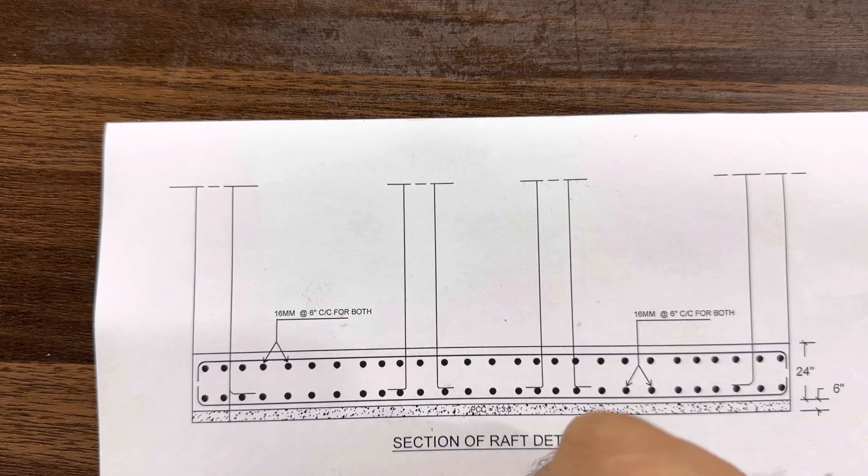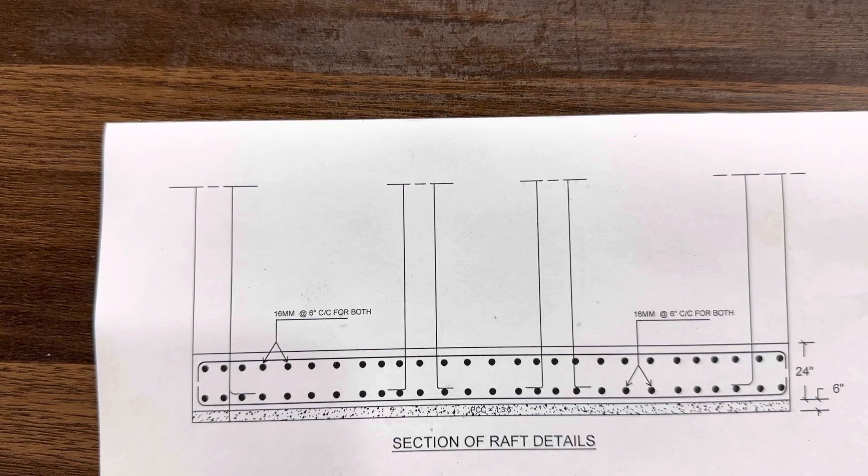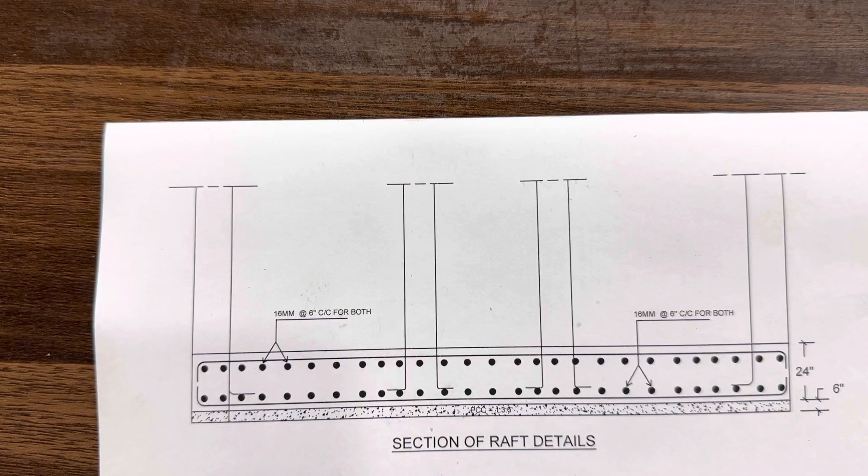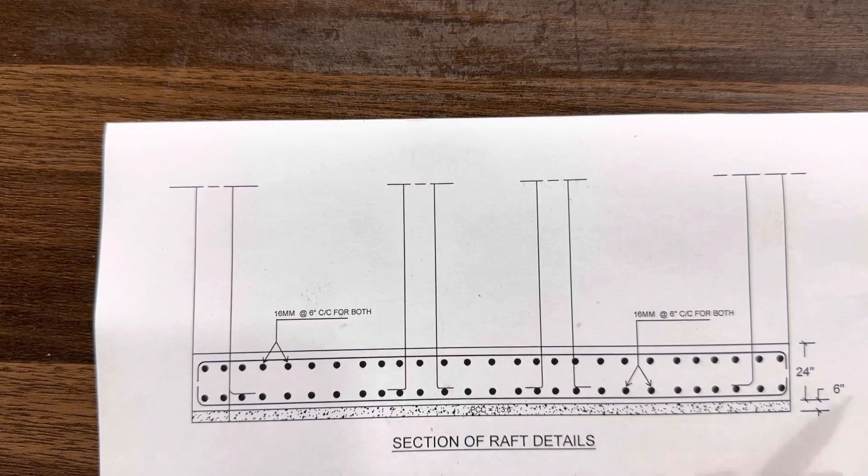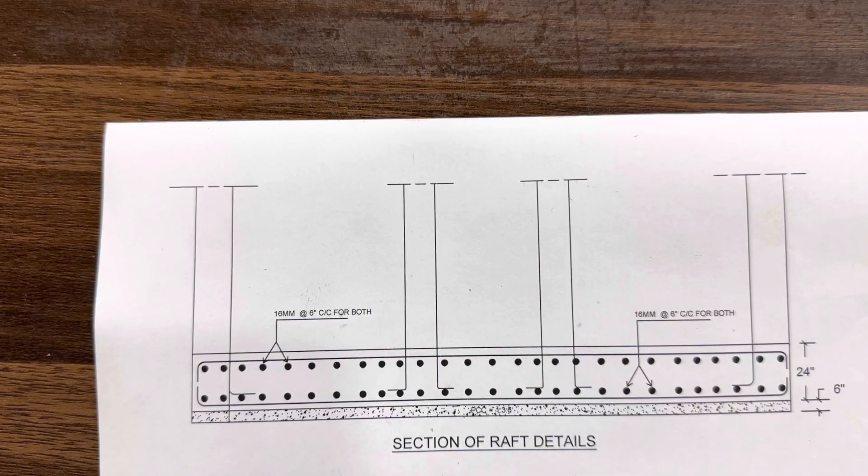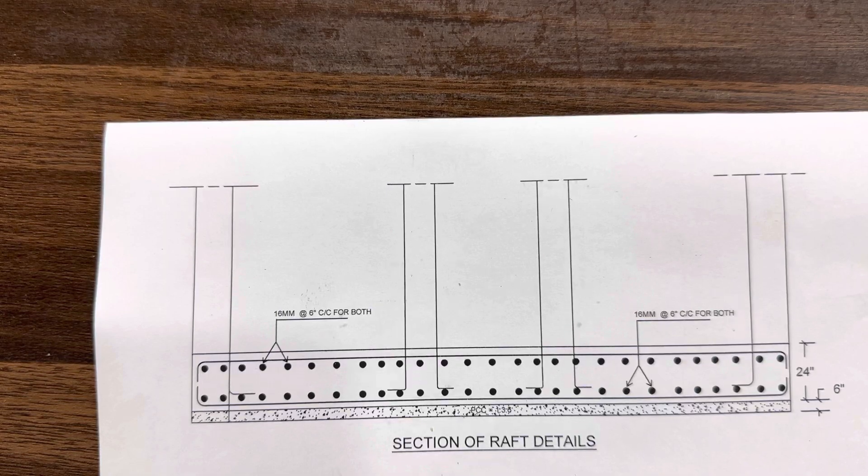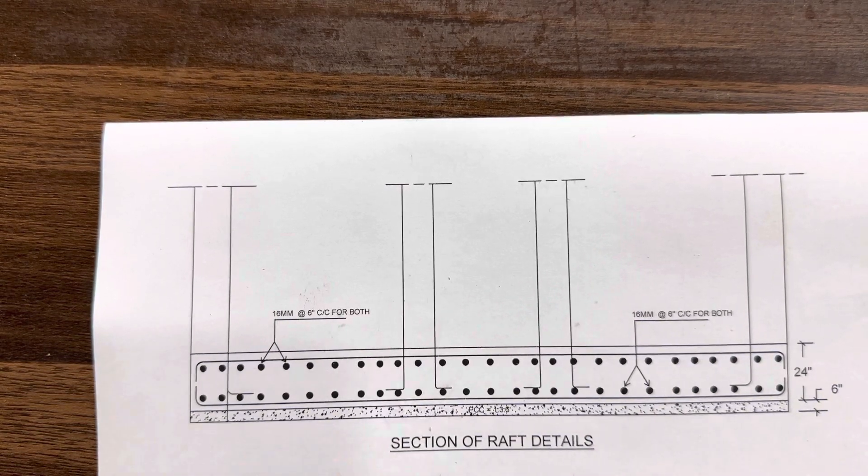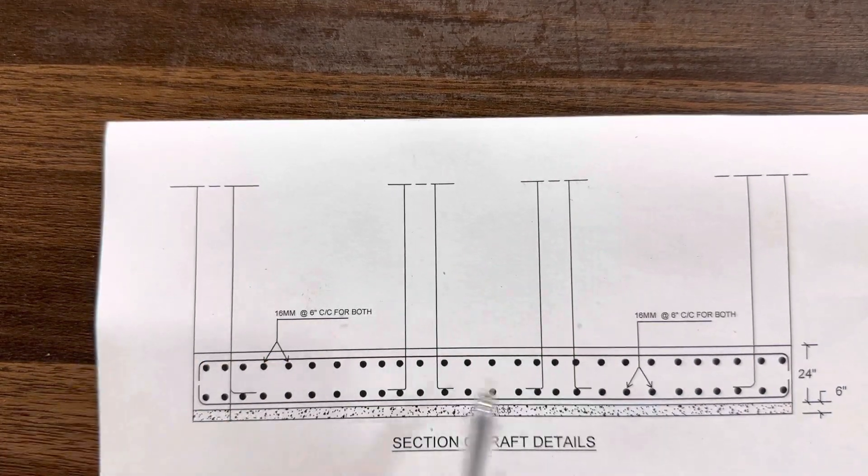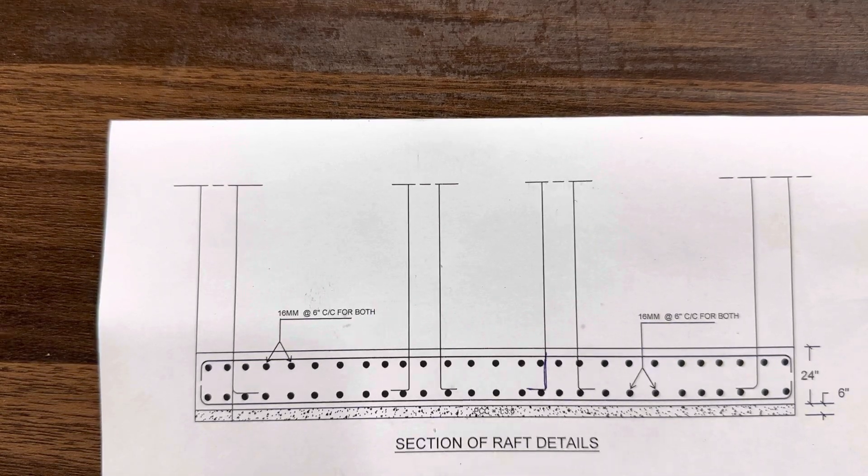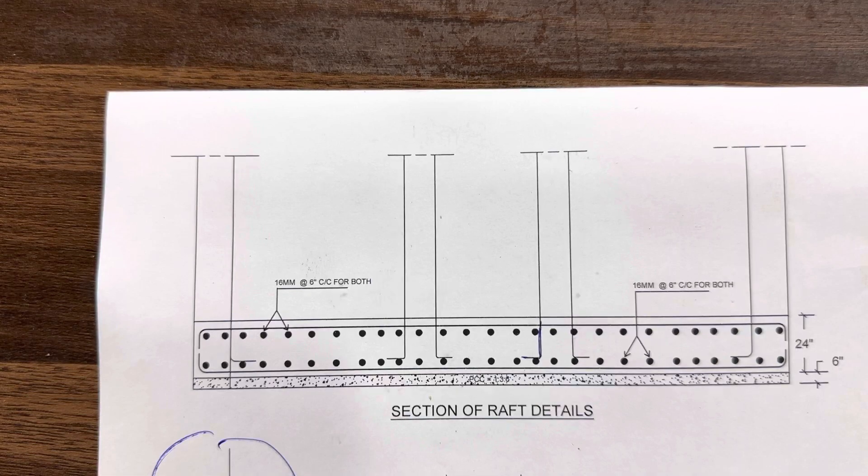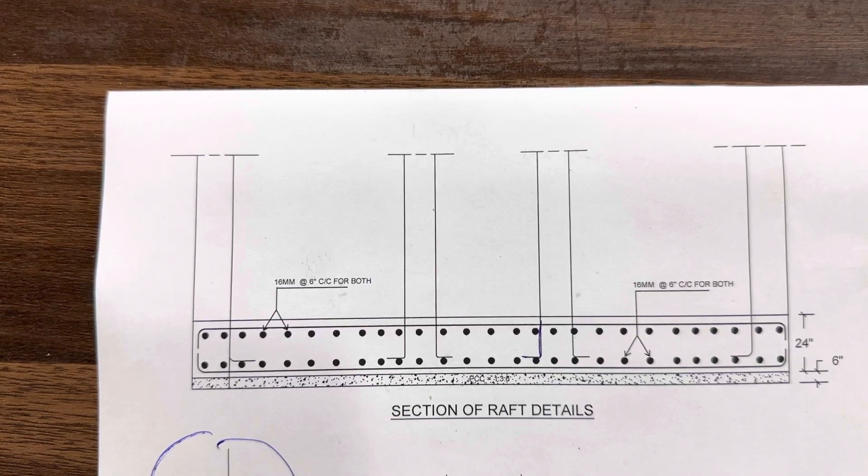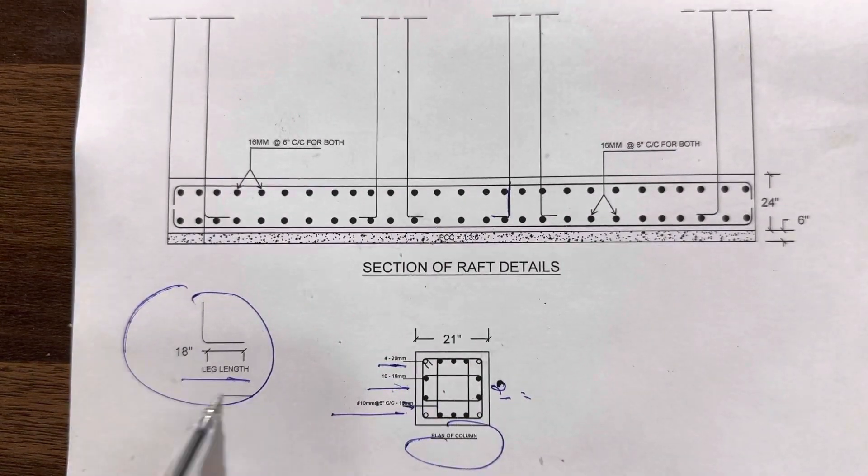The bed depth is 24 inches. Each side we have 3 inch concrete cover from bottom, left side, and right side. For all sides, the concrete cover is 75 millimeter or 3 inches, so the bed depth is 21 inches. Here you can see the columns and the column legs. I did one section which should be minimum 18 inches because the size of the column is 21 by 21 inches.